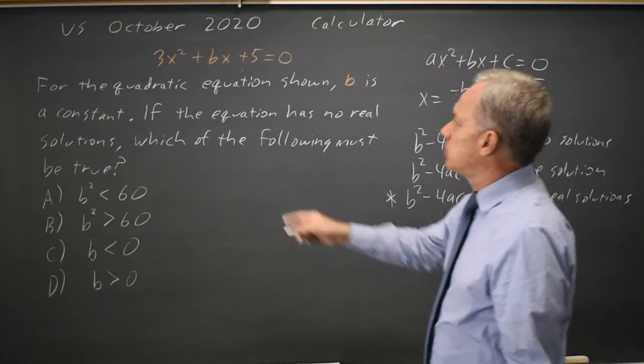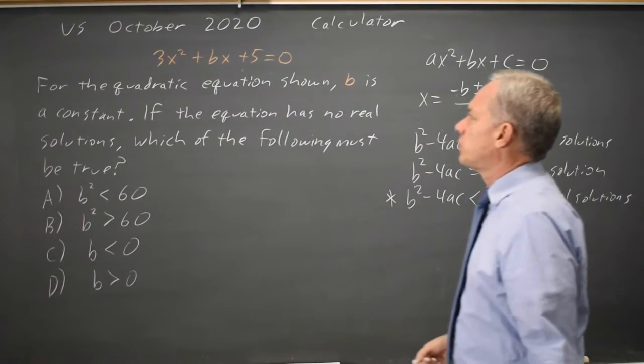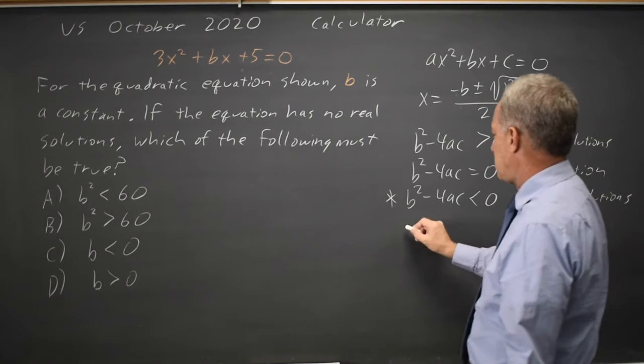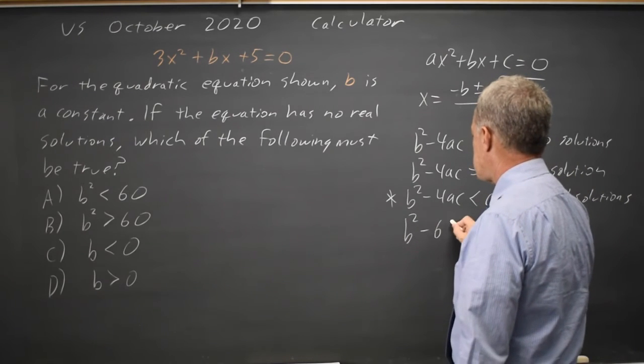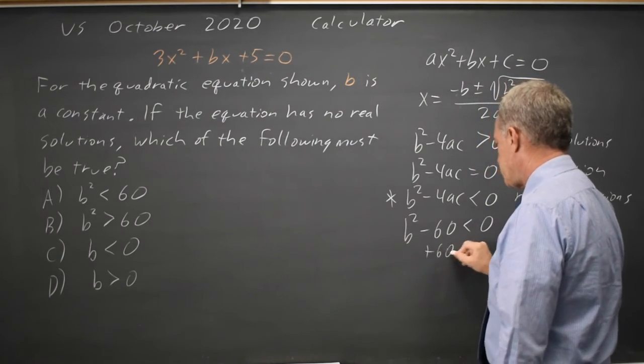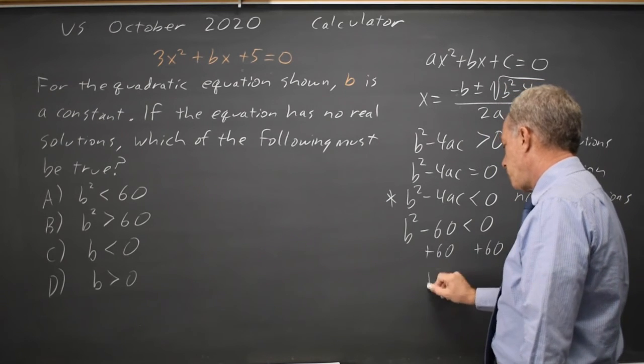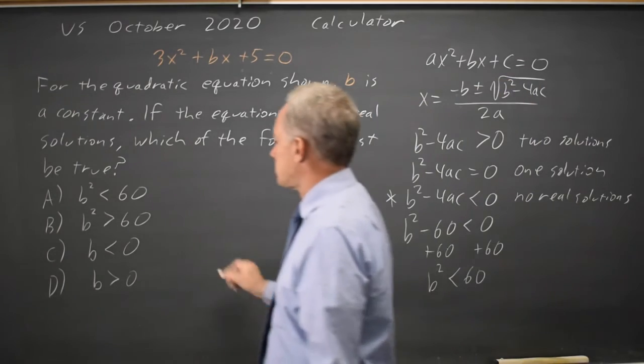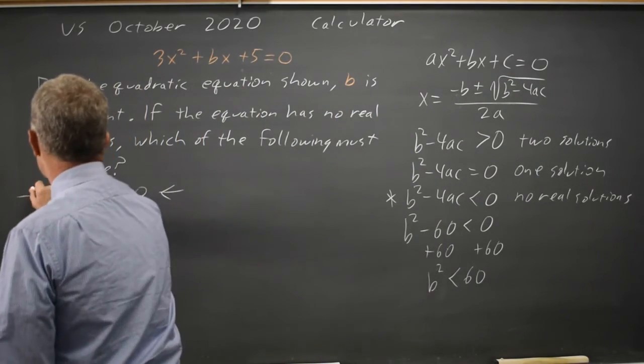Since A equals 3 and C equals 5, 4ac is 4 times 15 is 60. B squared minus 60, less than zero. Add 60 to both sides. And you get B squared less than 60 if there are no real solutions. That's choice A.